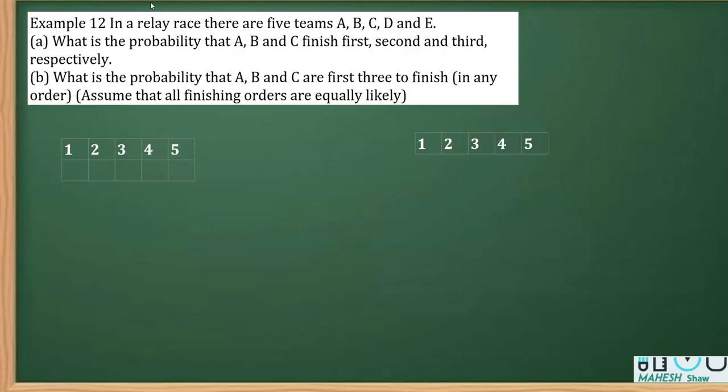In this video, I'm going to solve a probability question from our textbook. The problem states: In a relay race, there are five teams: A, B, C, D, and E.